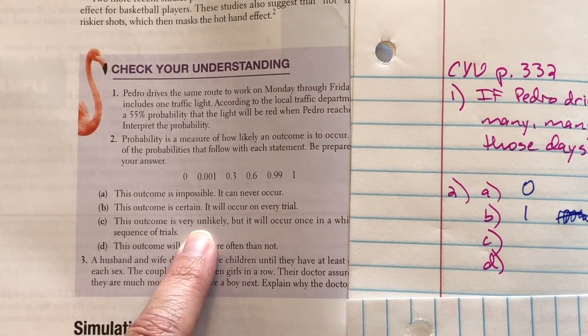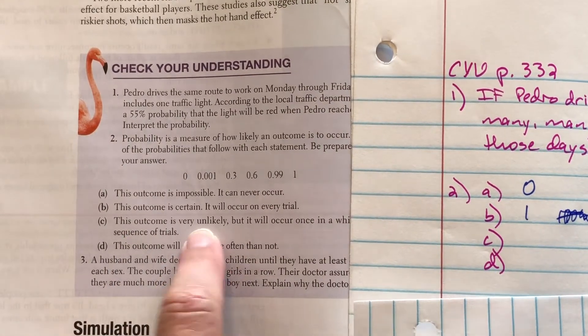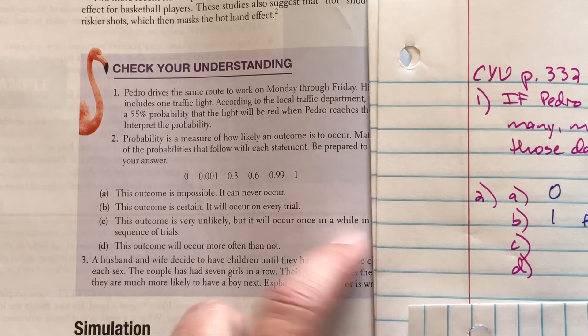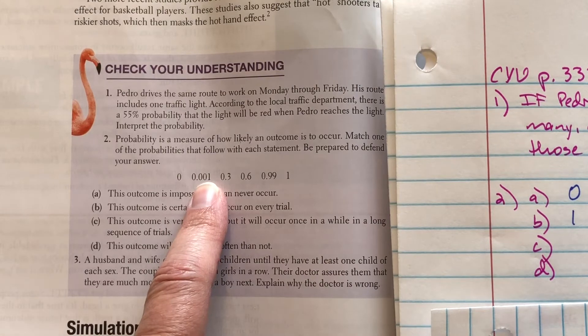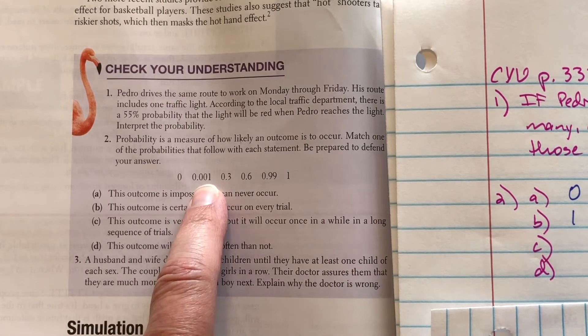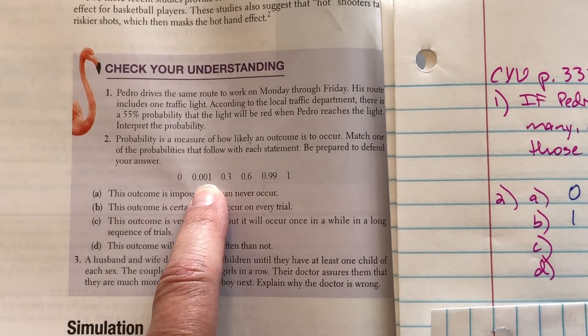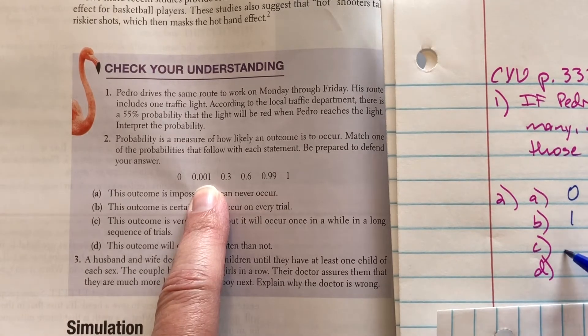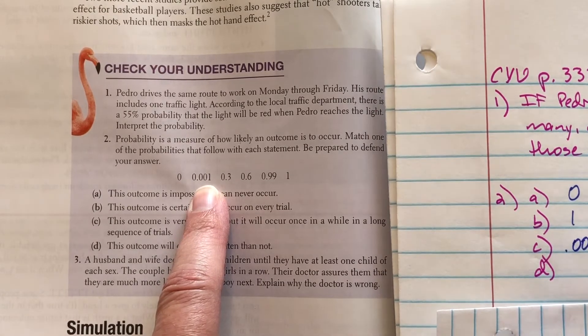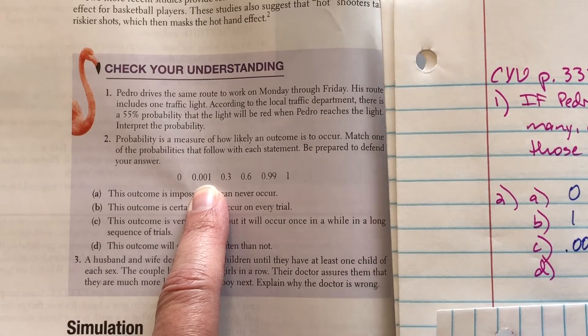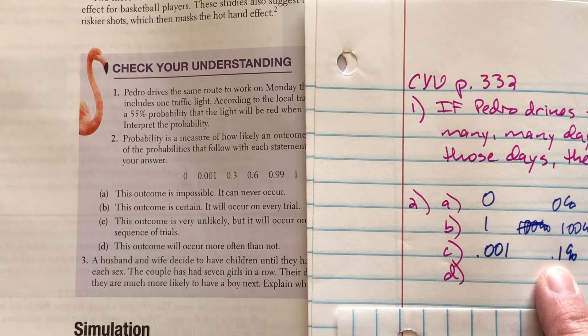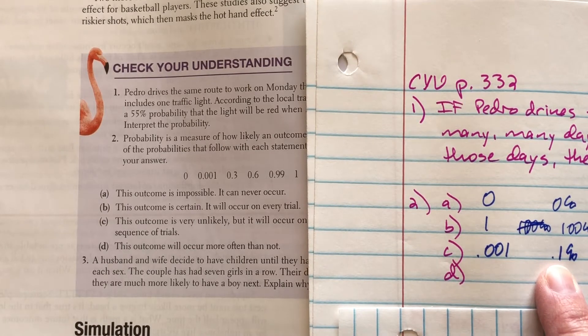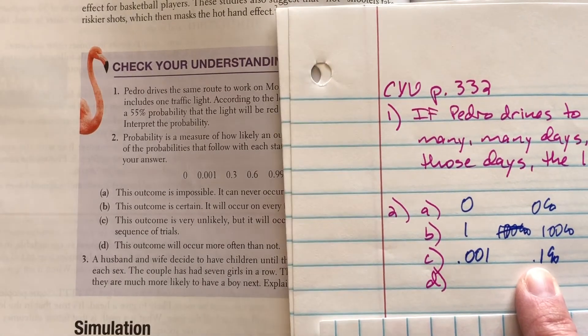The outcome is very unlikely, but it will occur once in a while in a long sequence of trials. So that's this one. It's probably not likely, but every now and then it will. It's got that very slight chance. 0.001 is the probability, which is a 0.1%. So a pretty small percent, but not impossible. It will happen every now and then in a long sequence of trials.